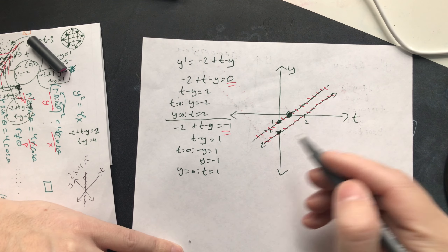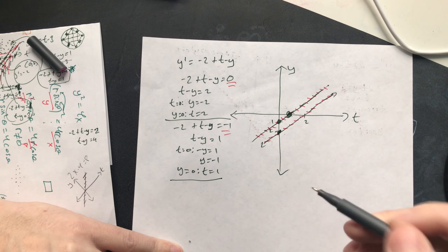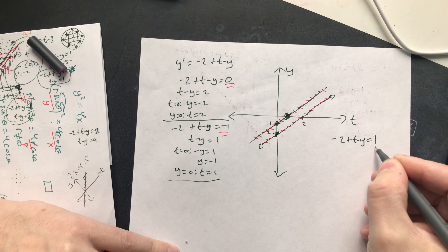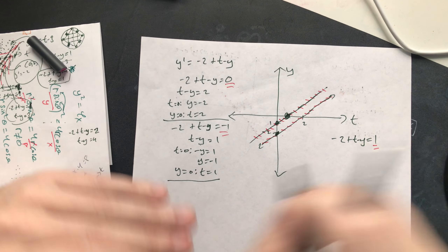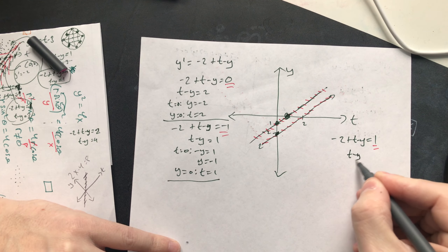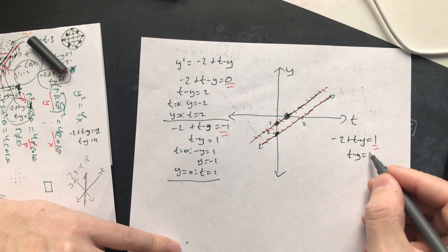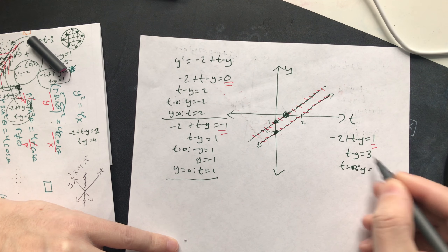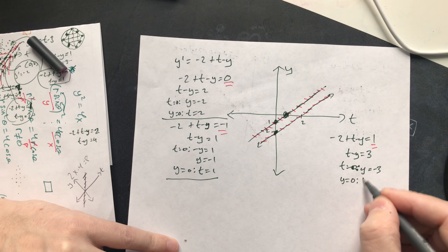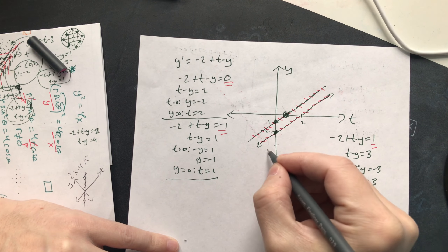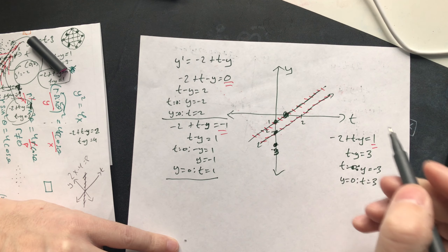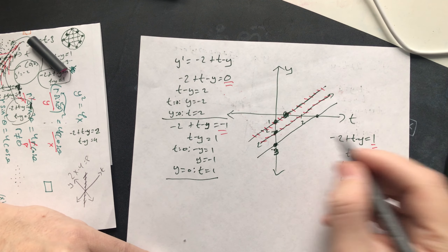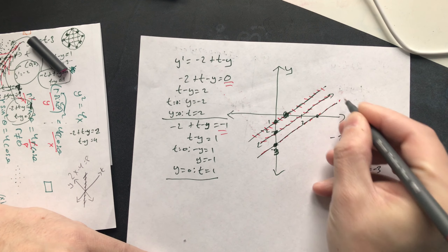Now try a positive slope value. Set -2 + t - y = 1 to find where the slope is always +1. Solving: t - y = 3. When t = 0, y = -3; when y = 0, t = 3. Draw that line, and along it all the slope segments have a positive value of +1, tilting upward slightly.